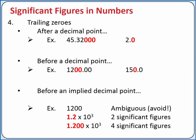But if a trailing zero occurs before an implied decimal point, it is ambiguous. This means we don't know if it is significant or not significant.